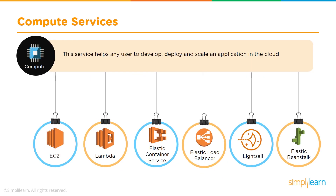Let's first talk about compute service. Compute service enables us to develop, deploy, run, and scale our applications and workloads on the cloud. Compute service is fundamental to any application, and AWS provides many options — starting from EC2, which is a VM in the cloud, to Lambda, which is serverless computing. Compute service also includes container services and services that help with batch processing, deploying applications, and load balancing requests when running applications on multiple servers.